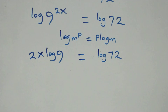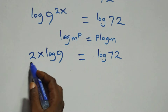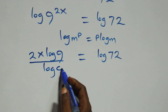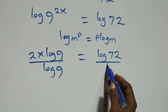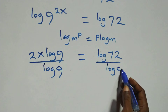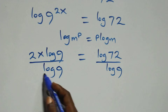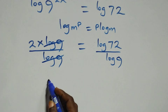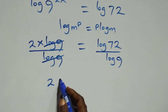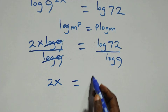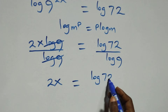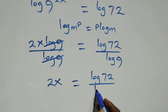At this next step, divide both sides by log 9. Divide this side by log 9 and also divide this side by log 9, which means log 9 cancels, and we have 2x equals to log 72 over log 9.